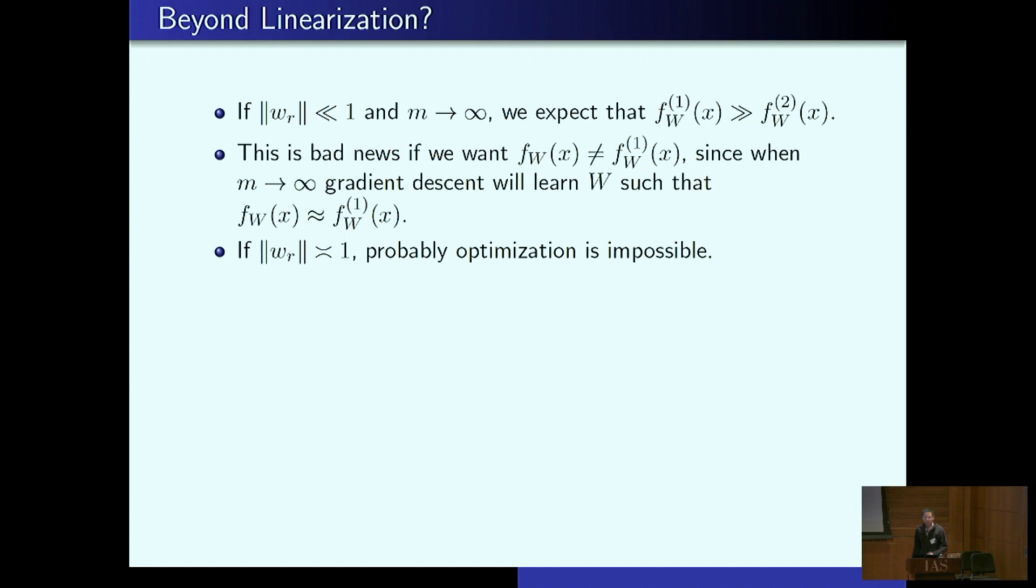So let's think about the scaling of these, the relative scaling of these two terms. If you move a small amount, anything less than one, then we would expect the linear term to dominate the second order term. This is bad news if you ever want to go beyond the first order term, because the first order term is dominant, which is exactly how all these NTK things are sort of proved. It's dominant, so it's the only one that matters. Okay, so then you think, maybe I just need to move really really far. So if you move order one away, then all the terms matter, but then optimization is probably difficult. You're really trying to optimize over the full parameter space.